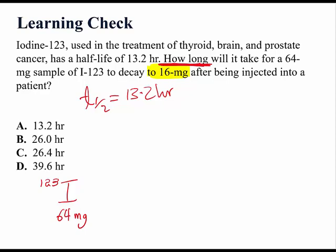One thing we know for sure is that after one half-life, which is 13.2 hours, the 64 mg would have decayed to 32 mg.